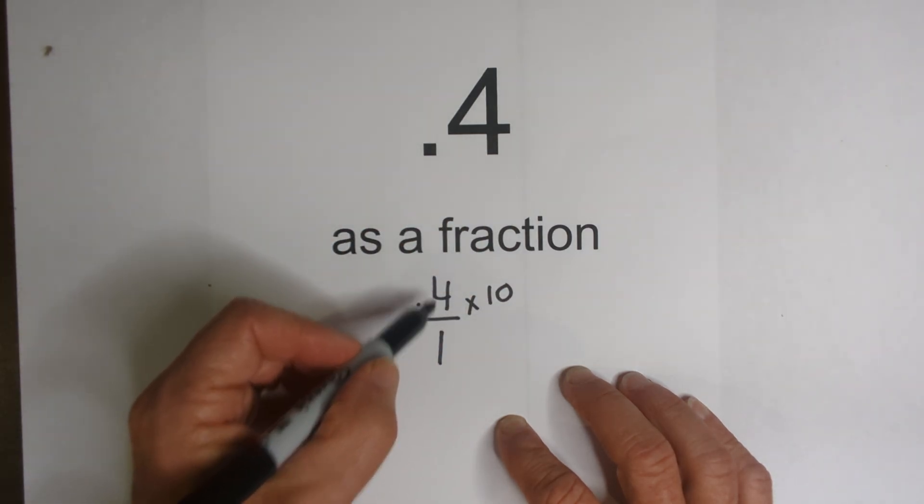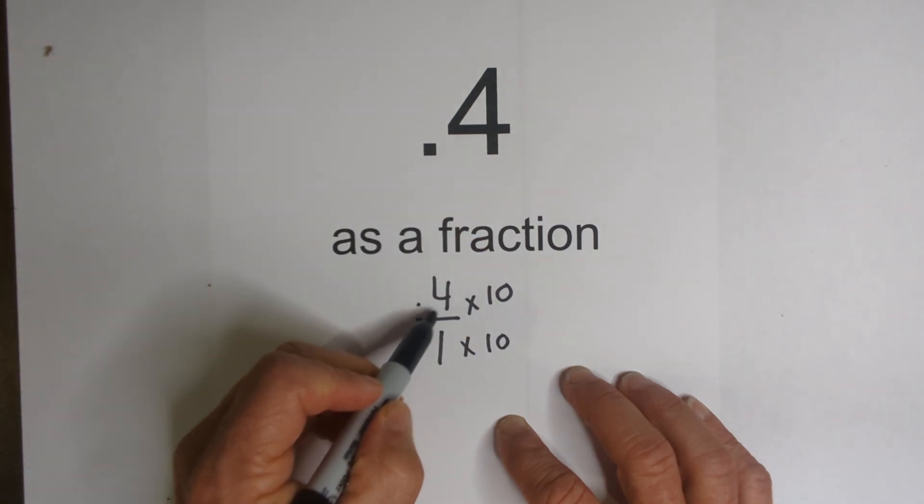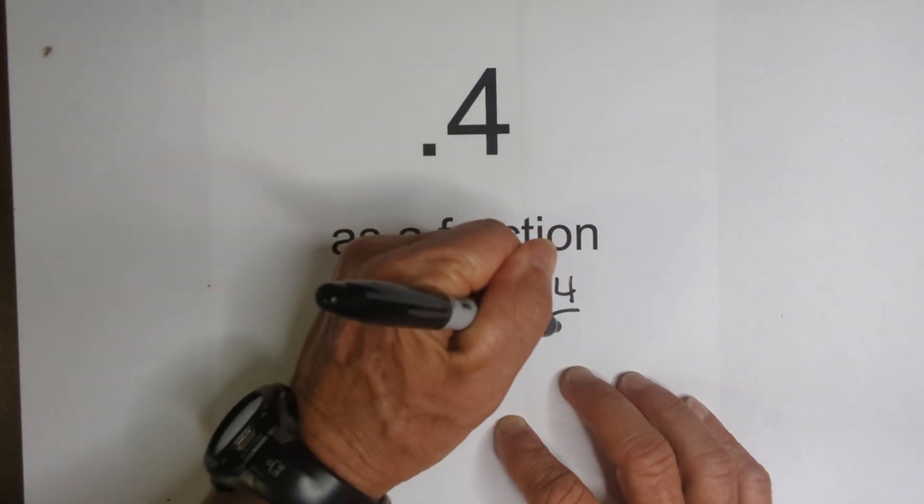So we need to multiply both top and bottom, numerator and denominator, by 10. Now when you have 4 tenths times 10, that gives you 4. 1 times 10 is 10.